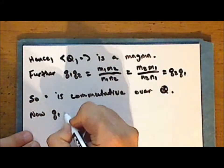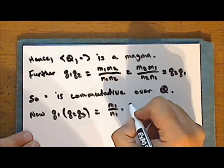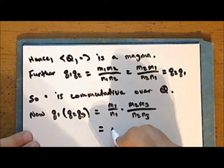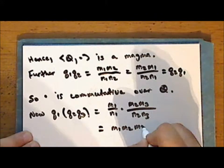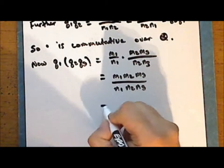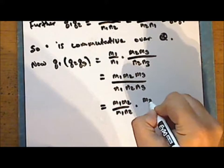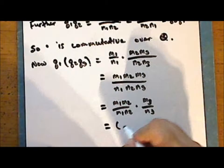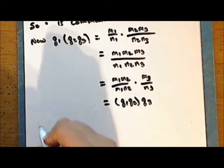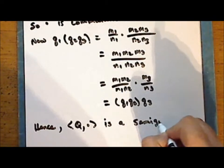Now we compute the product q1 times the quantity q2 times q3. This is the product of m1 over n1 times the ratio m2 times m3 over n2 times n3, and this is the ratio m1 times m2 times m3 over n1 times n2 times n3. Since multiplication is associative over the integers, this is the same as the product m1 times m2 over n1 times n2 times m3 over n3, which is the quantity q1 times q2 times q3. And so multiplication is associative over the rational numbers, and hence the structure consisting of the rational numbers together with multiplication is a semigroup.